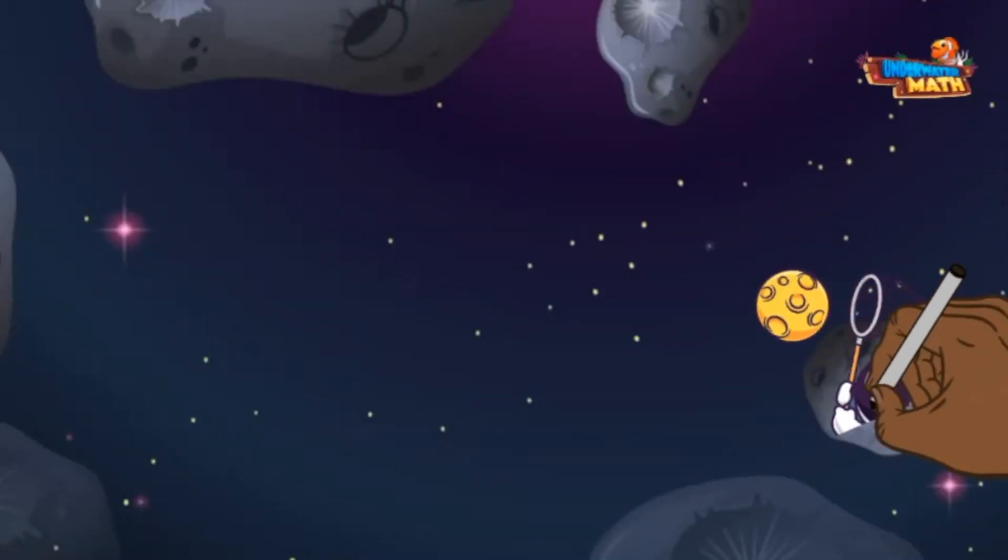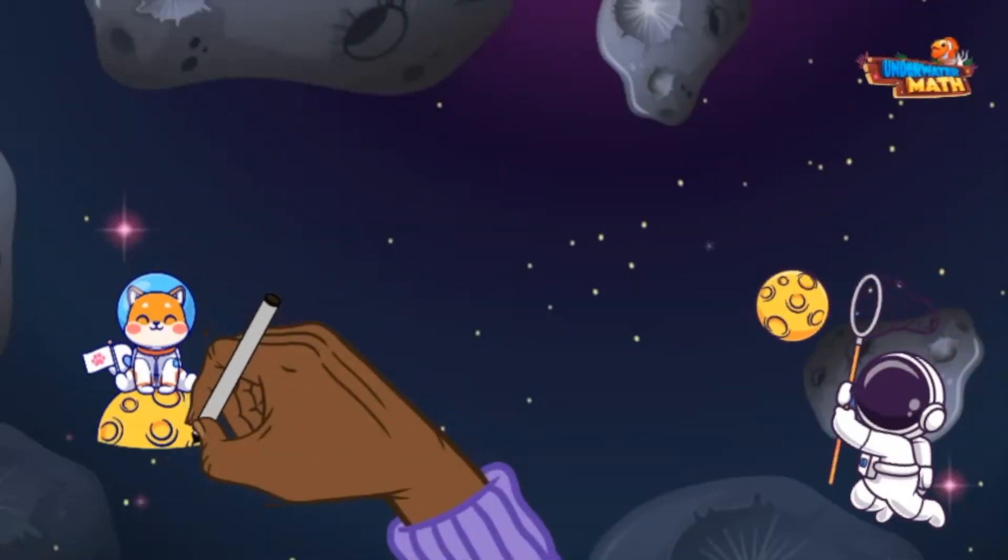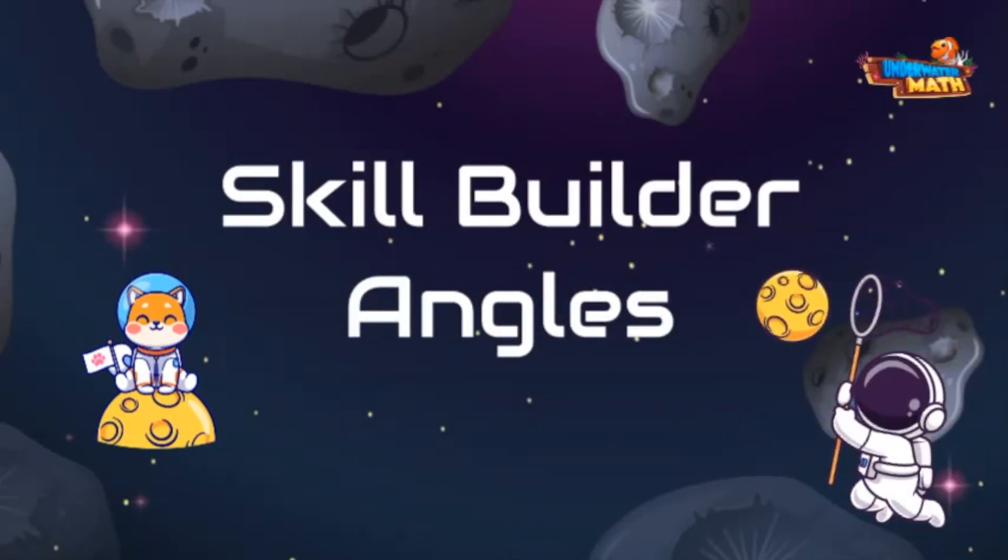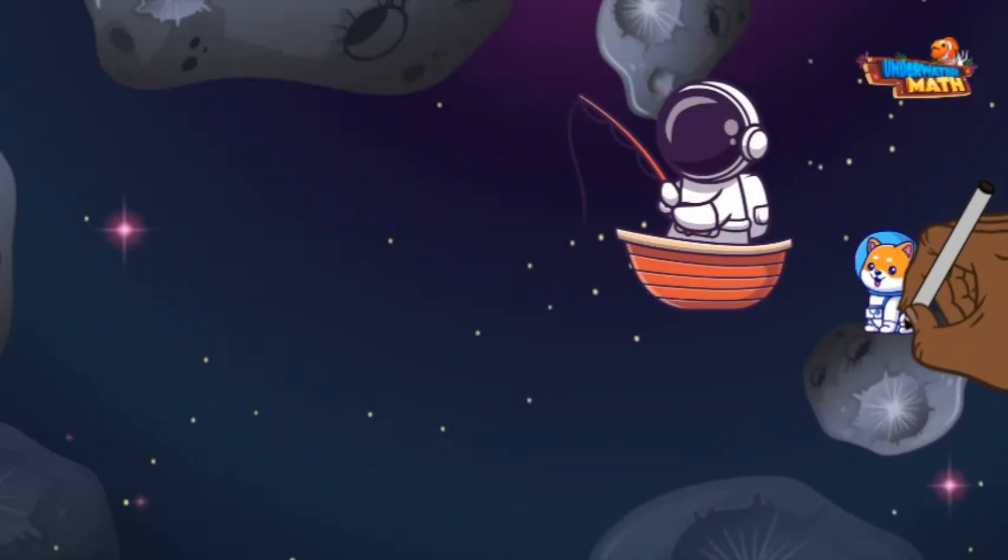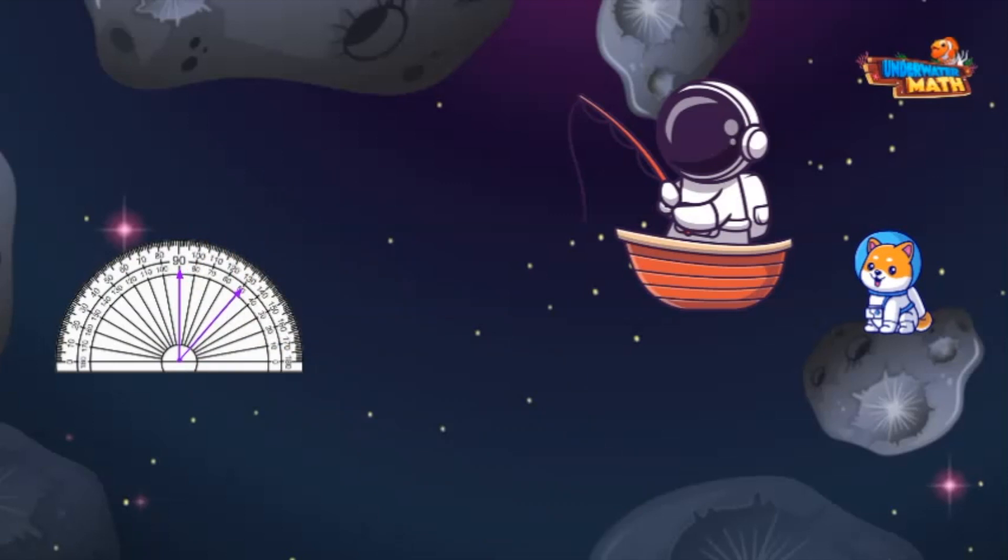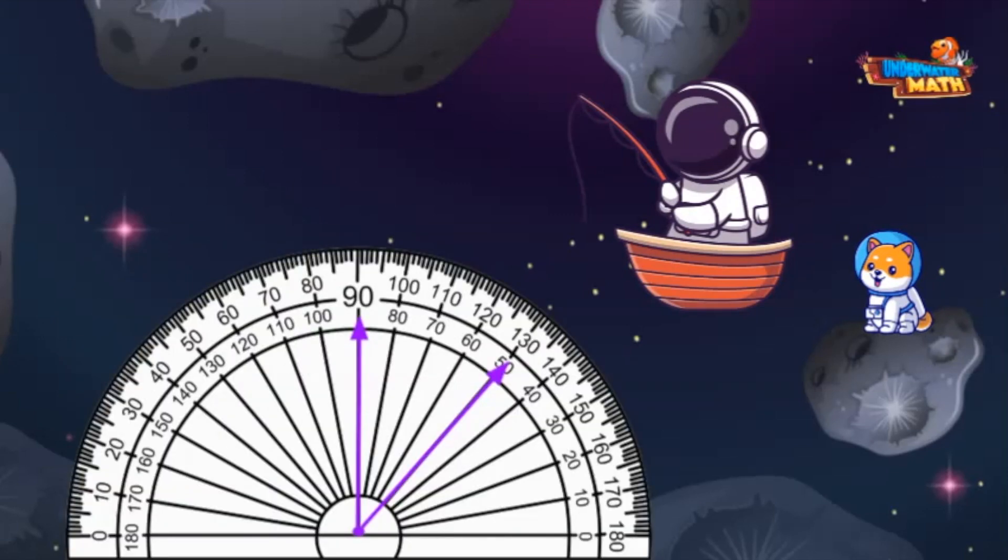Welcome back to underwater math, I'm Launch with Comet my spacer dog. Today we're going fishing in space. Reel it in! Our first catch is a protractor with an angle on it. Let's count the degrees on this bad boy.